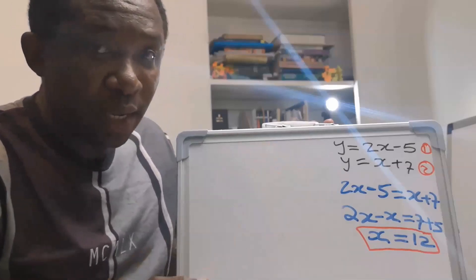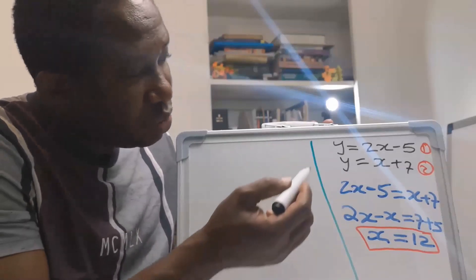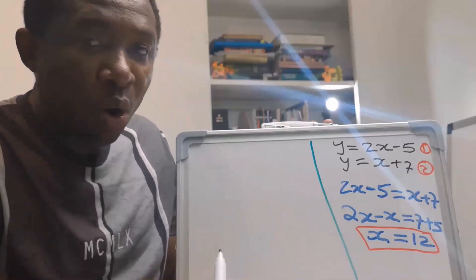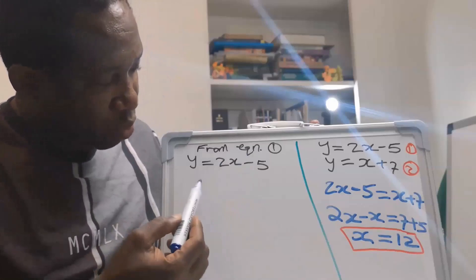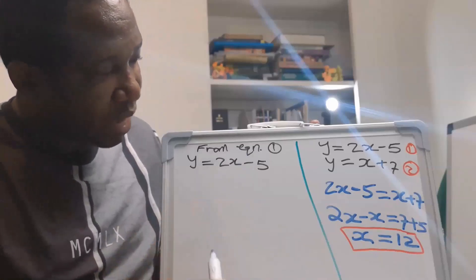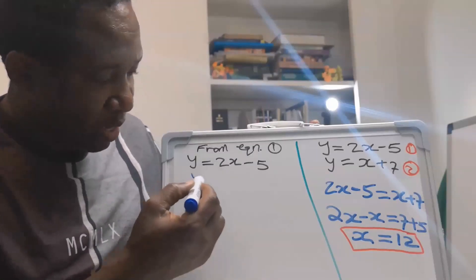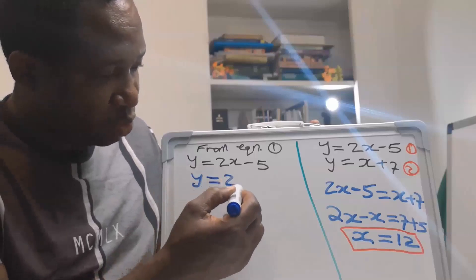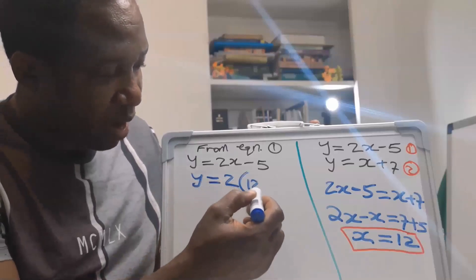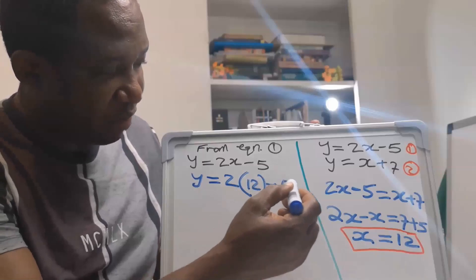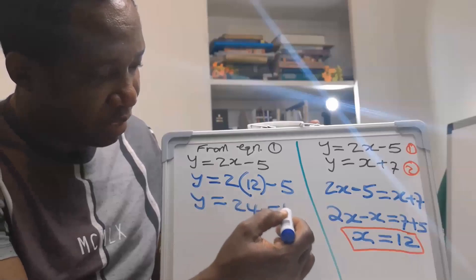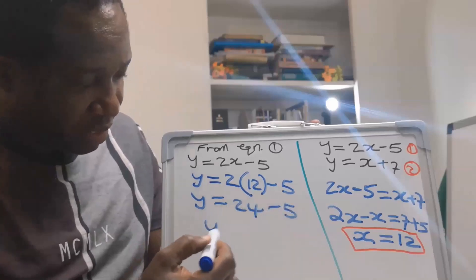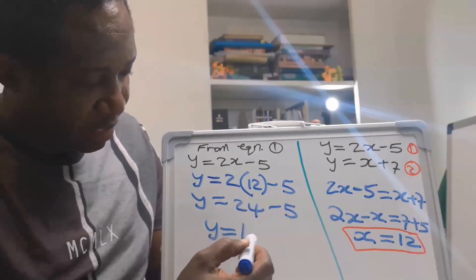Then, what is Y? We can substitute into either equation 1 or equation 2. From equation 1, where Y is 2X minus 5, we can have that Y is 2. Instead of X, I will have 12 minus 5. Y is 2 times 12 is 24 minus 5. You can see that Y is 19.